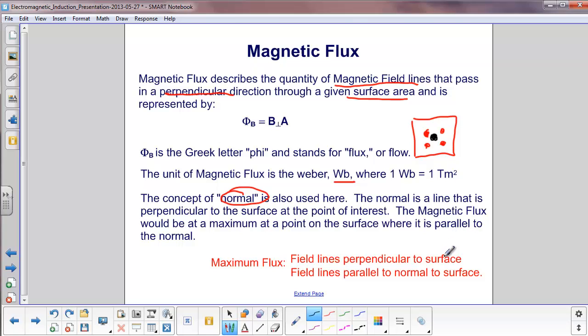When we get a maximum flux, the magnetic field lines are perpendicular to the surface. That's the perpendicular part. And the field lines are also parallel to the normal to the surface.